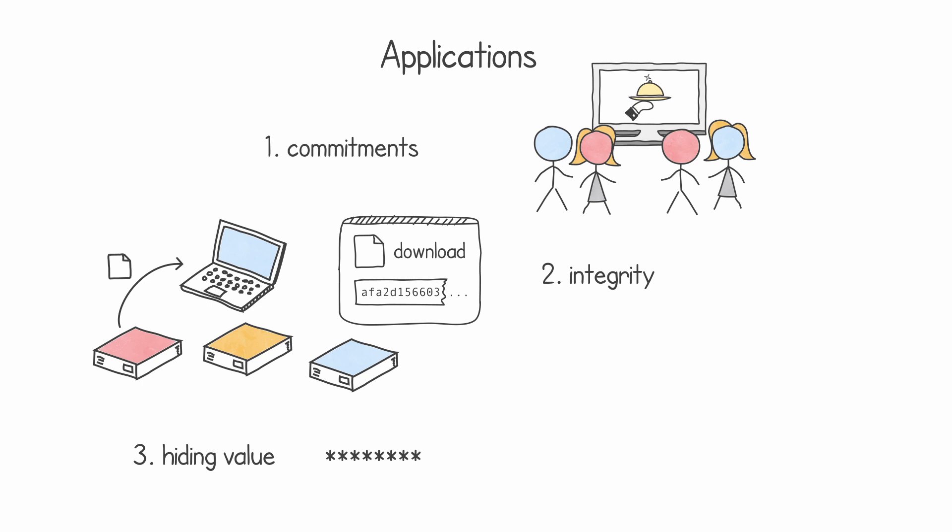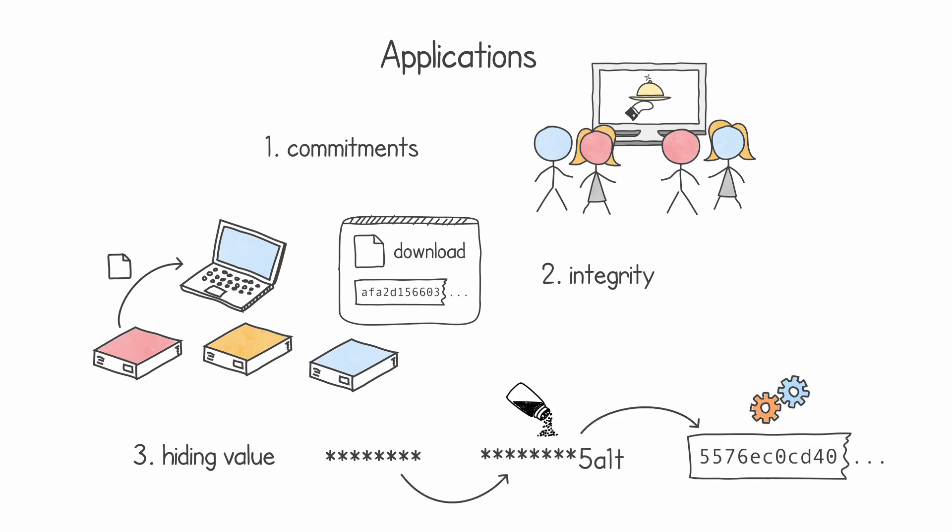Typically we don't store clear-text passwords in databases, because if someone gains access to that database they will have access to all the passwords. So what we do is apply a technique called salting and then hash the result. Instead of storing the clear-text password, we store that hash. This ensures that if someone gains access to where we store our hash codes, they will not be able to reverse that hash code to obtain the password.